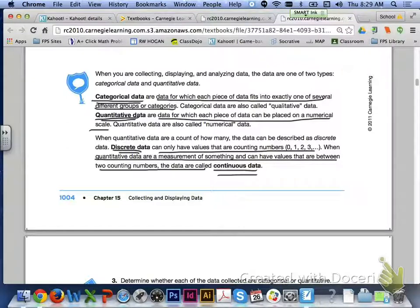When quantitative data are a count of how many, the data can be described as discrete data. Discrete data can only have values that are counting numbers like zero, one, two, and three. When quantitative data are a measurement of something and can have values that are between two counting numbers, then the data is called continuous data.